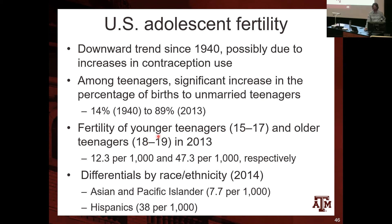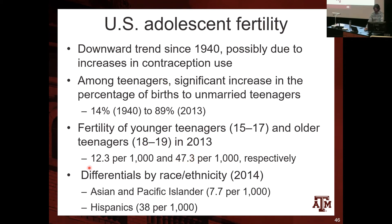There is also variation within the 15 to 19 age group. Fertility rates of younger teenagers (15 to 17) differ from older teenagers (18 to 19). For every 1,000 women between 15 and 17, approximately 12.3 births were counted back in 2013 in the US, while for women between 18 and 19 it was around 47.3 births per 1,000 in 2013. Most young teenagers having children are between 18 and 19.